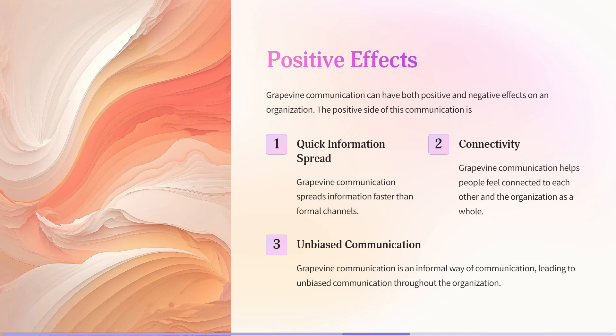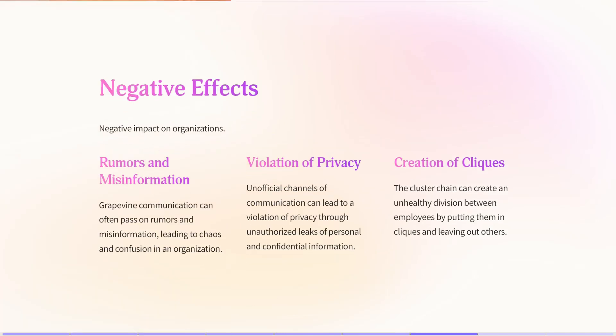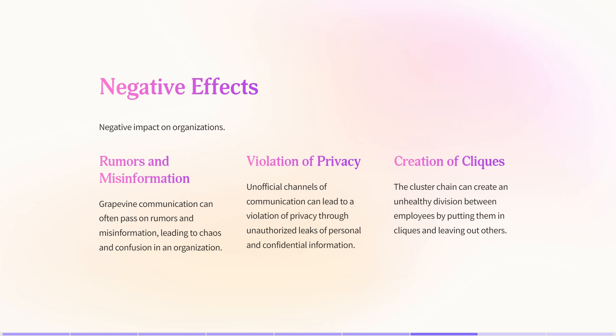Grapevine communication has a lot of positive effects: information can be spread very quickly, it has great connectivity, people feel connected with the organization, and it leads to unbiased informal communication. It also has negative effects: rumors and misinformation can be spread, there is a violation of privacy, leaks can be unauthorized and may carry personal or confidential information, and the cluster chain can sometimes create an unhealthy division between employees.